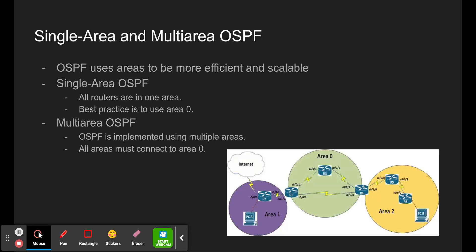To make OSPF more efficient and scalable, OSPF supports hierarchical routing using areas. An OSPF area is a group of routers that share the same link state information in their LSDBs. OSPF can be implemented in two ways: Single-area OSPF, where all routers are in one area with best practice being area 0, and multi-area OSPF, where OSPF is implemented using multiple areas in a hierarchical fashion. All areas must connect to the backbone area, which is area 0, and routers interconnecting the areas are referred to as area border routers.